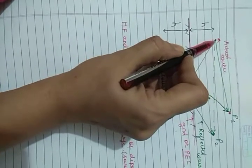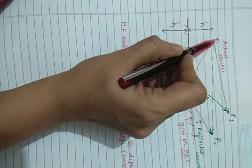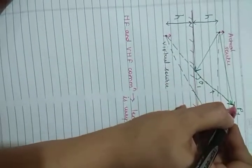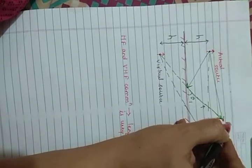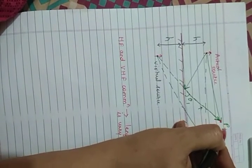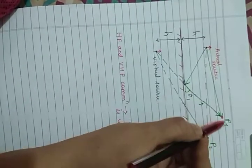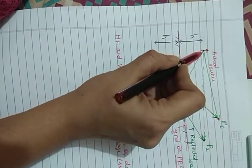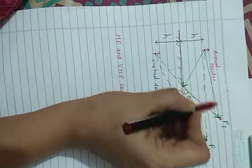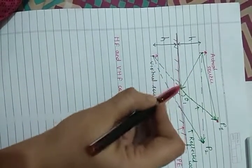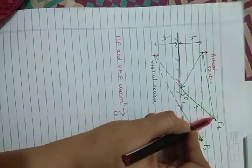This current carrying conductor or this radiating source will radiate in all possible directions. If we measure radiated field or radiated energy, radiated waves at point P1, then at point P1 there will be radiations, direct radiations from source as well as reflected radiations from the ground.